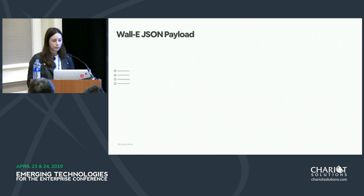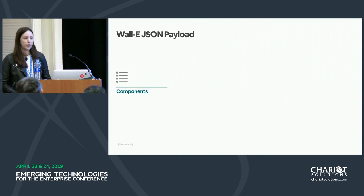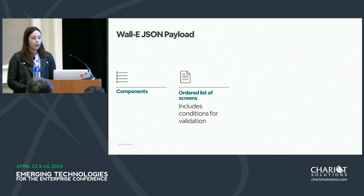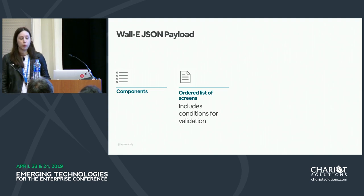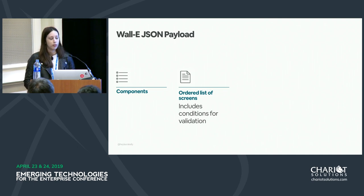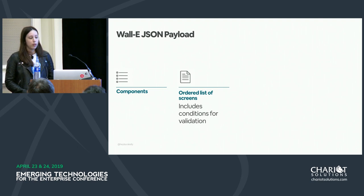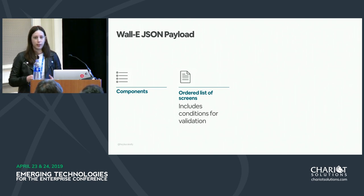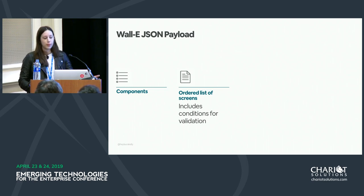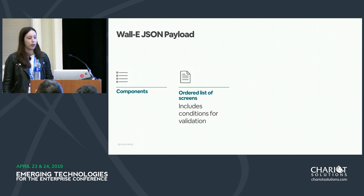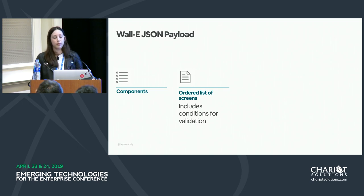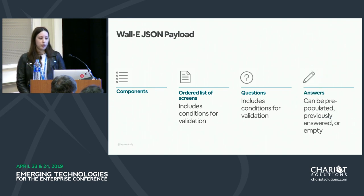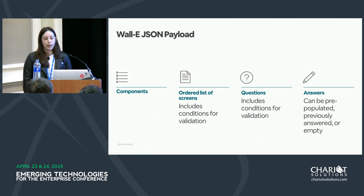A WALL-E JSON payload has an array of components, an ordered list of screens with validation conditions, and questions that also include validation conditions. The clients know how to interpret the WALL-E syntax to evaluate whether a state is valid, but the specific conditions for validation are sent up from the server. The API response also includes answers which could be pre-populated, previously answered, or empty, and those are used to validate the questions.